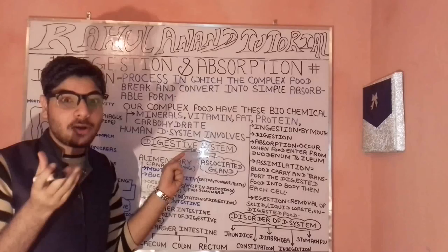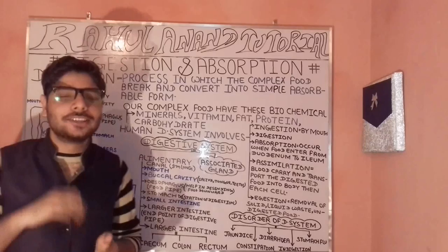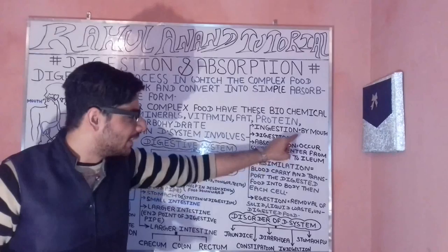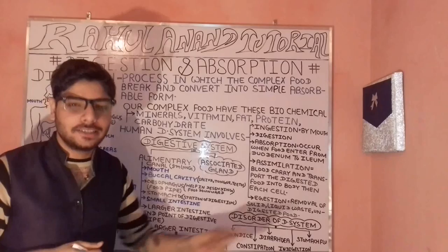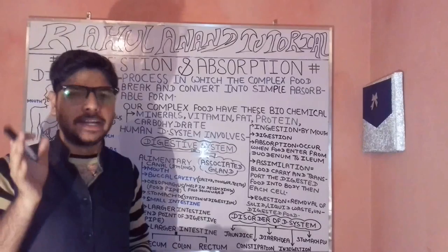Now let's understand the different parts involved in the human digestive system. The processes are: ingestion, digestion, absorption, assimilation, and ejection. Let's understand these in detail.